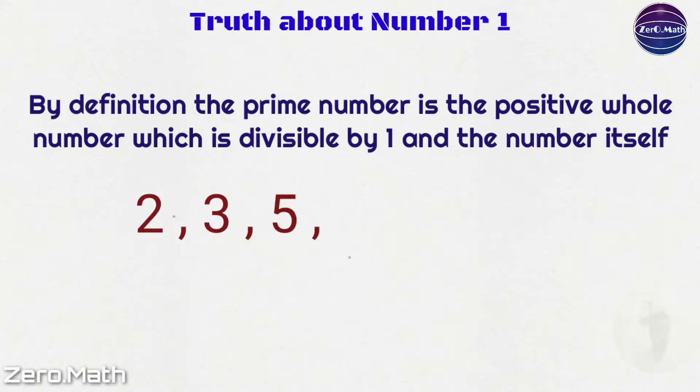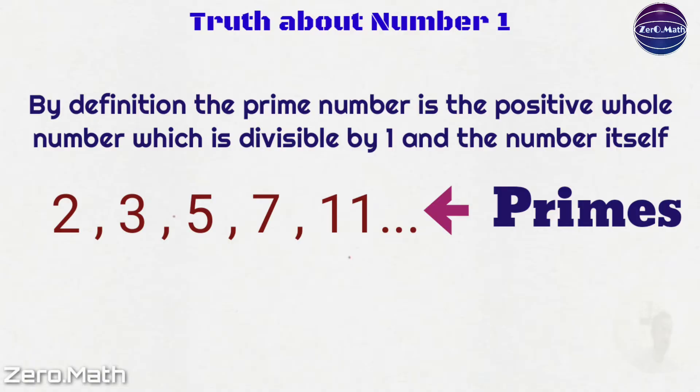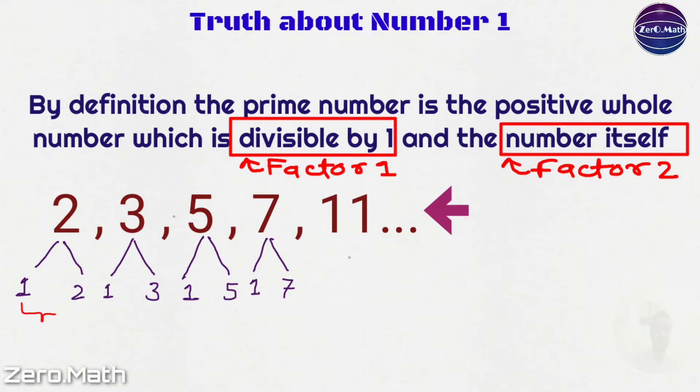For example, number 2, 3, 5, 7, 11 are some primes. So if you look at number 2, it has only 2 factors: 1 and number 2. Same with number 3, it has only 2 factors: 1 and 3, and so on.